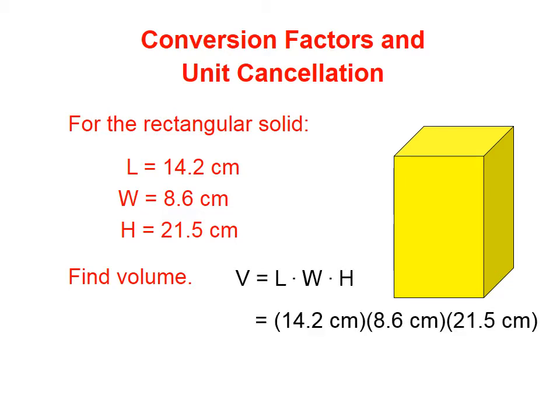When we multiply centimeters times centimeters times centimeters, the unit is centimeters times centimeters times centimeters, which is written in more abbreviated form as centimeters cubed. Notice that we've employed the correct convention for significant figures and rounding.